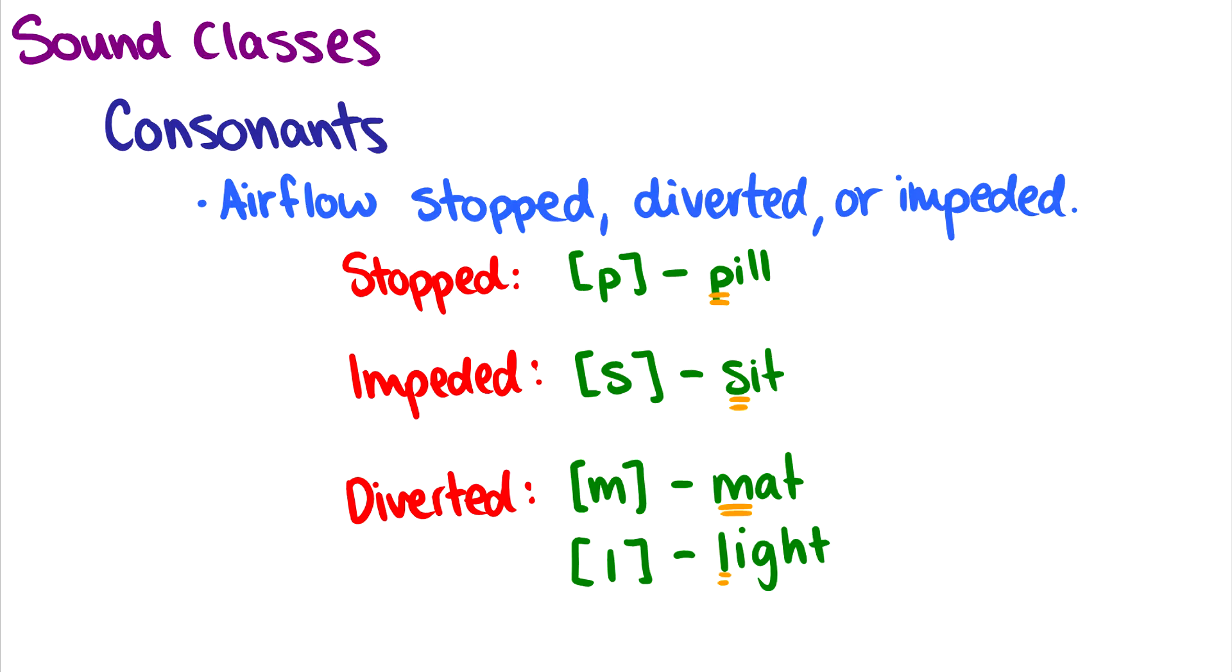So let's separate sounds into different classes, and we're just going to do the very basics. The first sound class is the class of consonants. In the class of consonants, these are sounds where the airflow is either completely stopped, it is diverted, or it is impeded. When I say impeded, I mean you have this really tight constriction, like in a sound like S, where that air is really impeded, but you can still get airflow out. An example of stopped would be in a word like pill. Before you can make that puh sound, you have to get airflow right behind your two lips, and you have to hold it there for a little bit, and then that puh is made when the air is released.